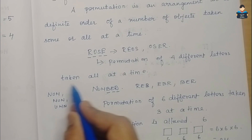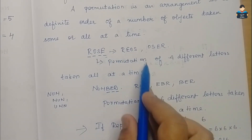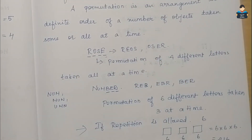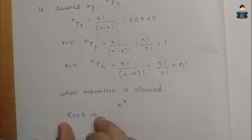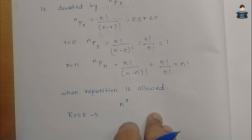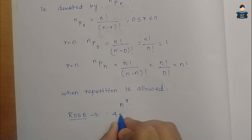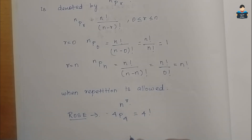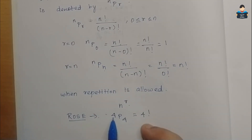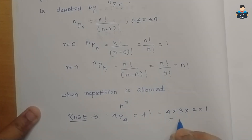Permutation of four different letters taken all at a time — that is nPn. So this is 4P4, which equals 4 factorial, which is 4 into 3 into 2 into 1, that is 24 ways. We arrange these 4 letters when repetition is not allowed.